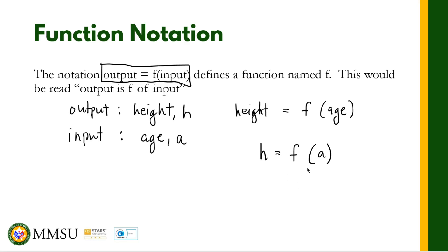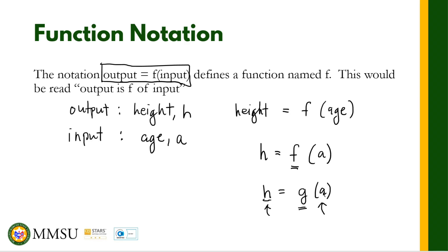So ganyan yung pagkakasulat natin for function notation. Ang pangalan ngayon ng function natin ay f — this is function f. Pwede din nating sabihin h is equal to g of a — in this case, ang pangalan ng function natin ay g. So kapag nakikita natin ng ganito, dito nasa loob ng parentheses — that is the input quantity. Ito naman — this is the output quantity. Take note: itong parenthesis dito, hindi ito nagsisimbolize ng multiplication — this is a function notation.